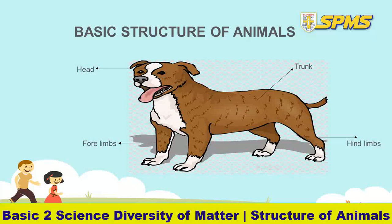When you move to the left-hand side downwards, you see another arrow pointing to two things — that is the limbs. The front legs are known as the fore limbs, and the two legs behind are known as the hind limbs. So the animal has three main parts: the head, the trunk, and the limbs. The limbs are divided into two — the fore limbs and the hind limbs.